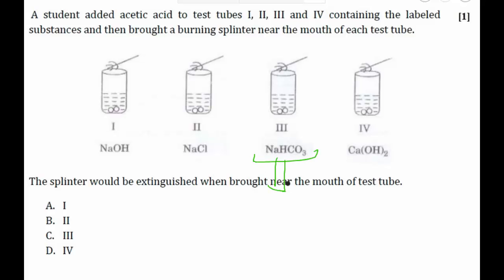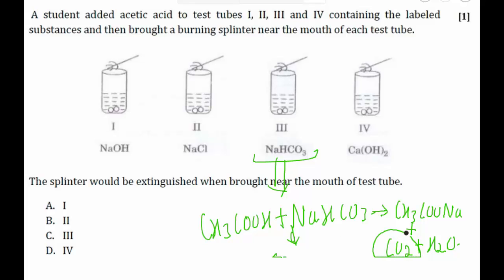In the third case, when acetic acid reacts with NaHCO3, then a salt of acetic acid, that is CH3COONa, and carbon dioxide and water will be produced. Because this carbon dioxide gas is evolved, it will extinguish the splinter.